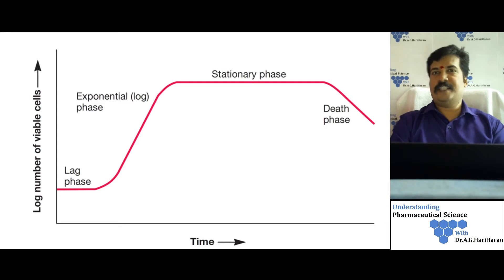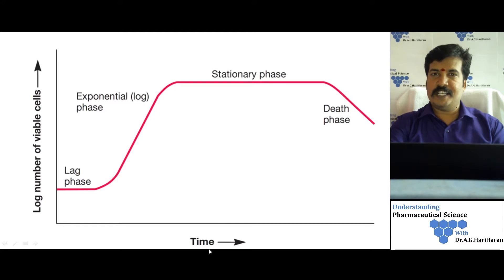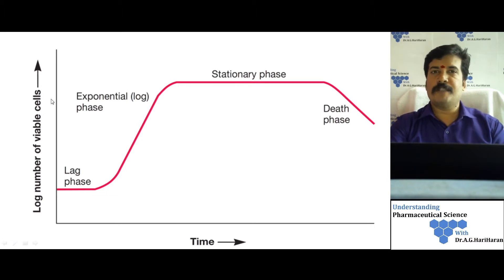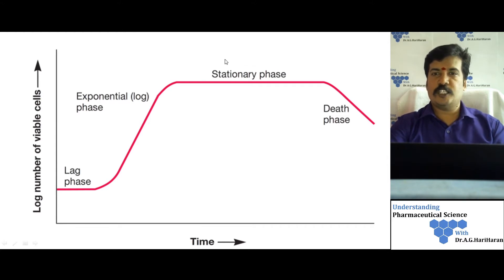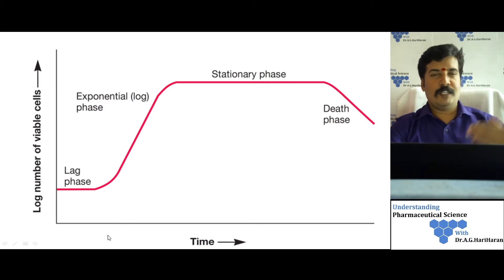We plot a growth curve by placing time of incubation on the x-axis against the number of viable cells — expressed in logarithmic form — on the y-axis. In this curve we find four distinct phases: the lag phase, the log or exponential phase, the stationary phase, and finally the death phase.